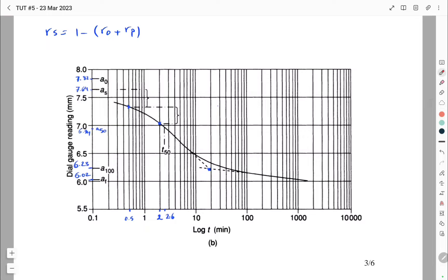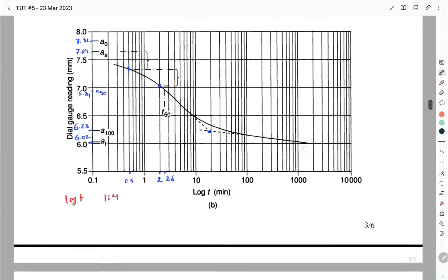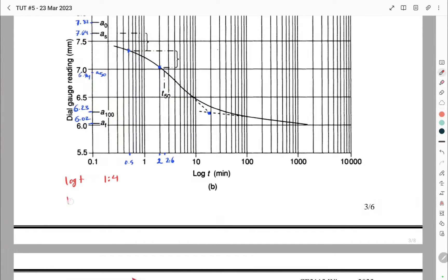In the first step, you have to pick two points on the plot which have a log T ratio of 1 to 4. So you can pick a point with log T equal to 1 and then another point with log T of 4, or you can pick another point with log T of 0.5 and then another point with log T of 2, or any other two values that have the same ratio of 1 to 4.